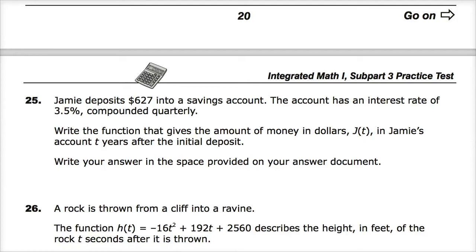Jamie deposits $627 into a savings account, which is a really weird amount. The account has an interest rate of 3.5% compounded quarterly. I should be using my highlighter - there's something important, it's easy to miss. Write the function J(t) in Jamie's account t years after the initial deposit.